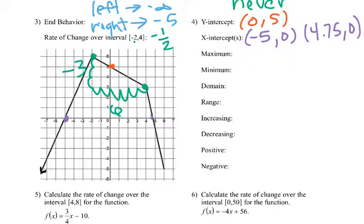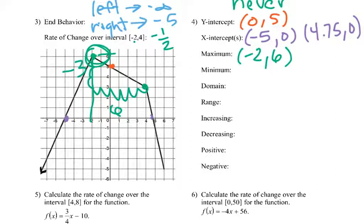Maximum, highest point is right here, and that's (negative 2, 6). So negative 2 for the x, 6 for the y. The minimum — because this keeps going down, it doesn't have one. Technically this would be a relative minimum, but we're not worried about relative minimums right now.